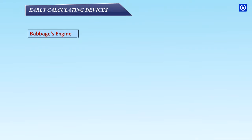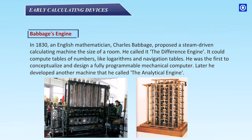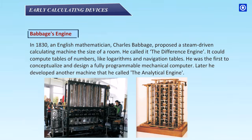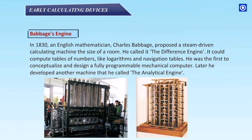Babbage's Engine: In 1830, an English mathematician, Charles Babbage, proposed a steam-driven calculating machine the size of a room. He called it the Difference Engine. It could compute tables of numbers like logarithms and navigation tables. He was the first to conceptualize and design a fully programmable mechanical computer. Later, he developed another machine that he called the Analytical Engine.